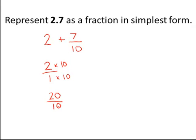2 is equivalent to 20 over 10, and now I can add it together with the 7 over 10 to obtain 27 tenths as my final answer.